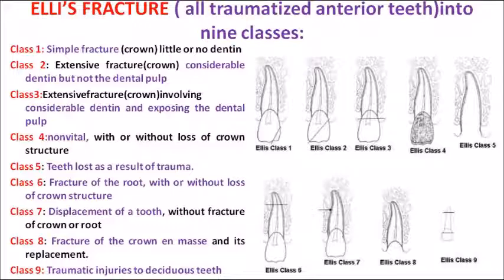Class 8 is when the entire crown portion — not the root — is fractured. Only the crown portion is entirely fractured. Class 9 is related to the pediatric department: traumatic injuries to the deciduous tooth.